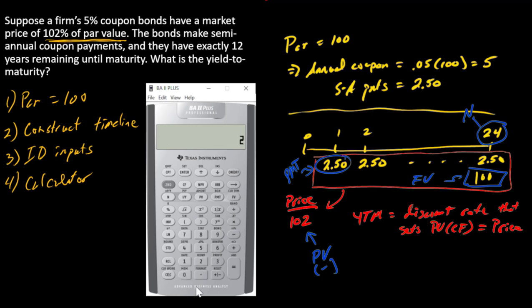All right, so let's go to our calculator and put these in. So I've got 100 that goes into FV, two and a half goes into PMT, 24 goes into N, 102 with a negative sign goes into PV, and now I'm ready to compute I. So compute I and I get this number.